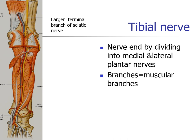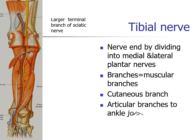The tibial nerve gives muscular branches to tibialis posterior, flexor digitorum longus, flexor hallucis longus, and soleus from their deep surfaces. It also gives articular branches to the ankle joint, cutaneous branches — the medial calcaneal branch supplying the skin of the heel — and terminates as medial and lateral plantar nerves.